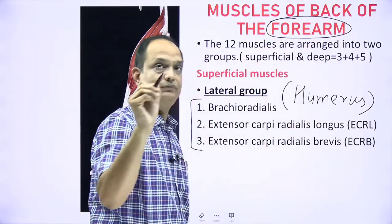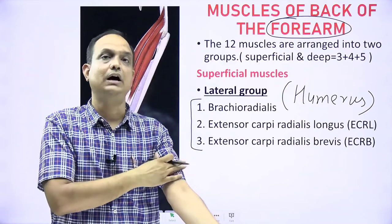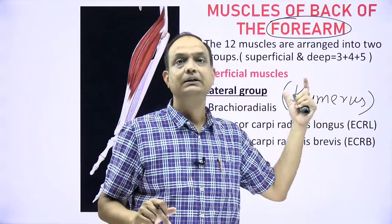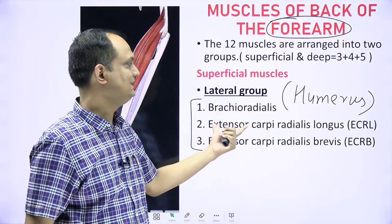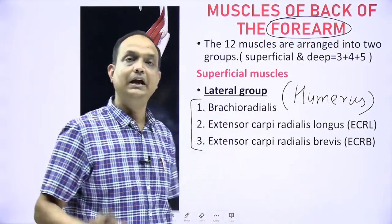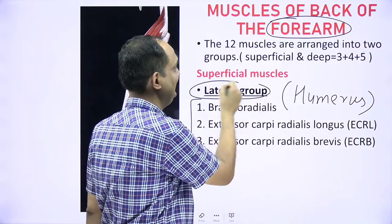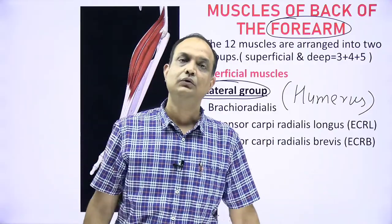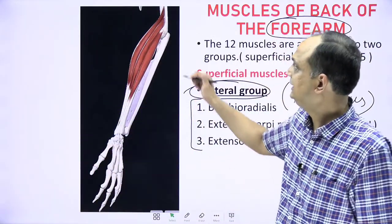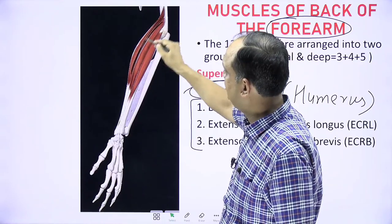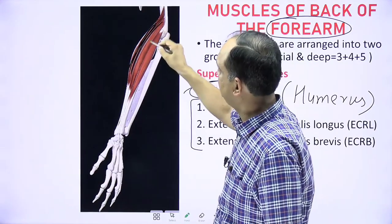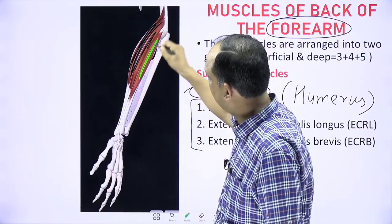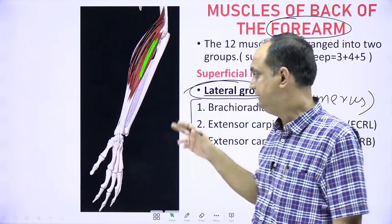Though we are reading muscles of the forearm, these three lateral muscles still arise from the arm bone — the humerus. They are present along the lateral border of the forearm and are known as the lateral or radial muscles. In the diagram: brachioradialis is the most superficial, just behind it is extensor carpi radialis longus, and the deepest of the three is extensor carpi radialis brevis.